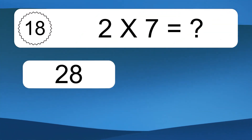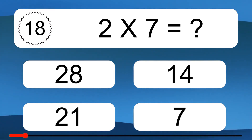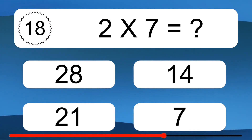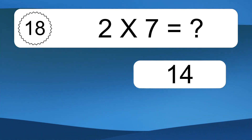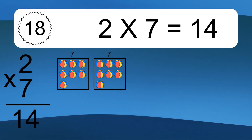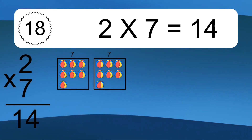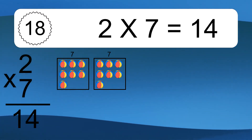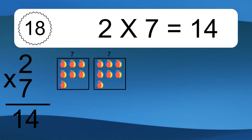2 times 7 equals what? 2 times 7 equals 14. We have 2 boxes and each box has 7 colorful balls inside. If you count all the balls in all the boxes together, you will have 2 times 7 balls. This equals 14 balls.